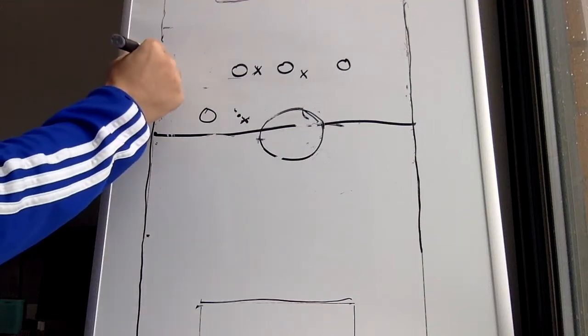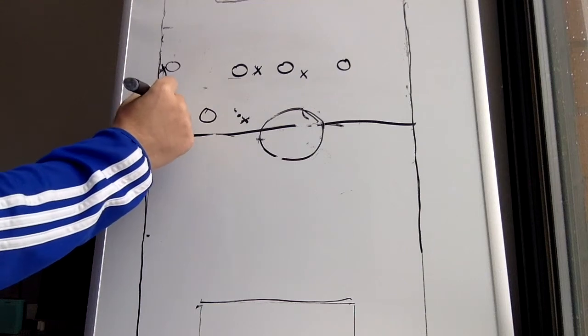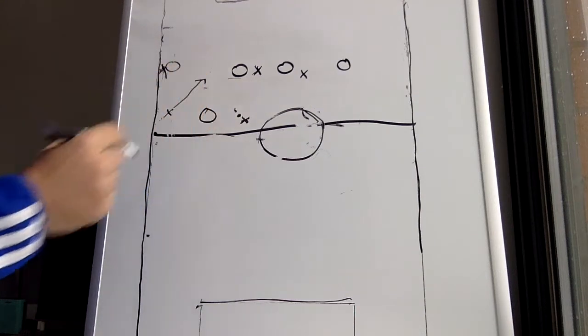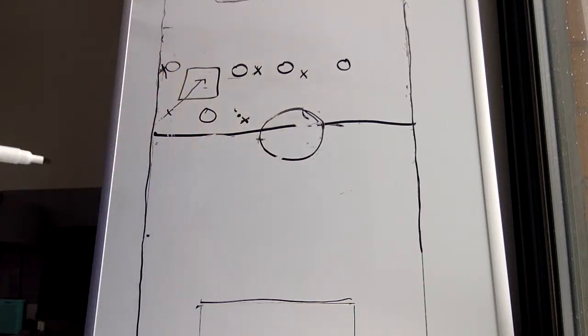Next, if the defender comes all the way out wide to get the winger, now the wing back can make that run in there, exploiting the space that was left, right?